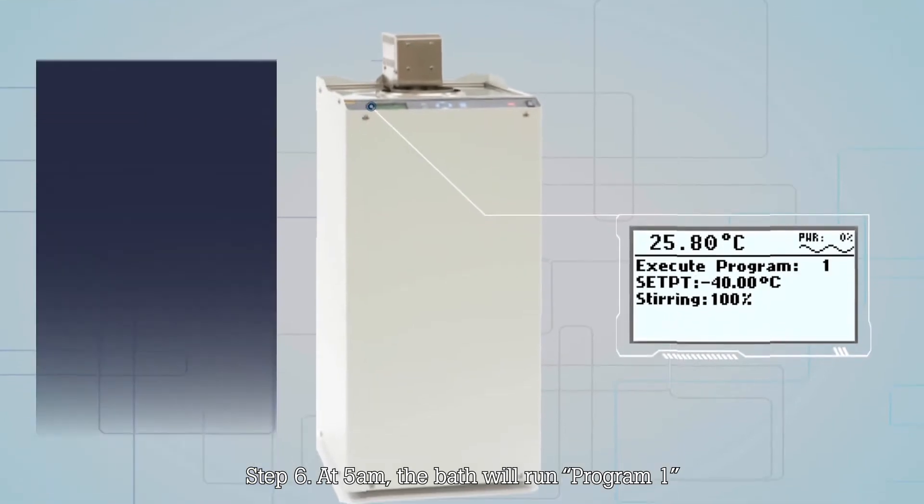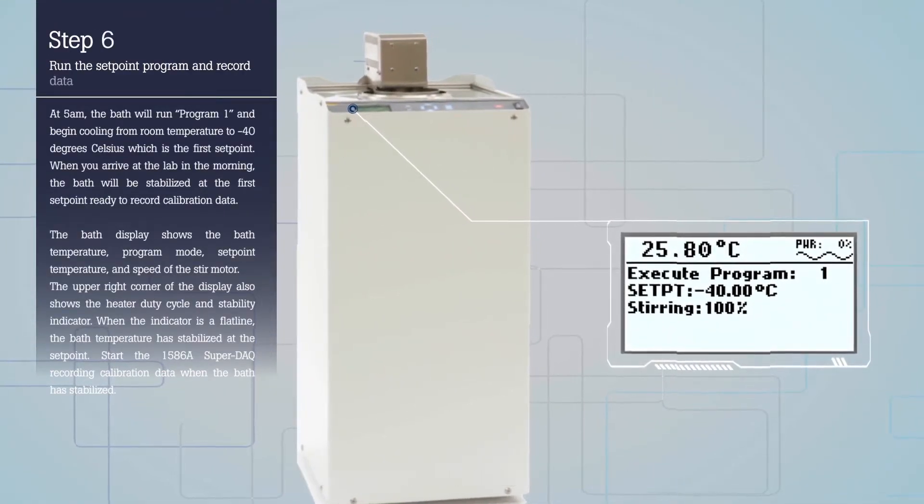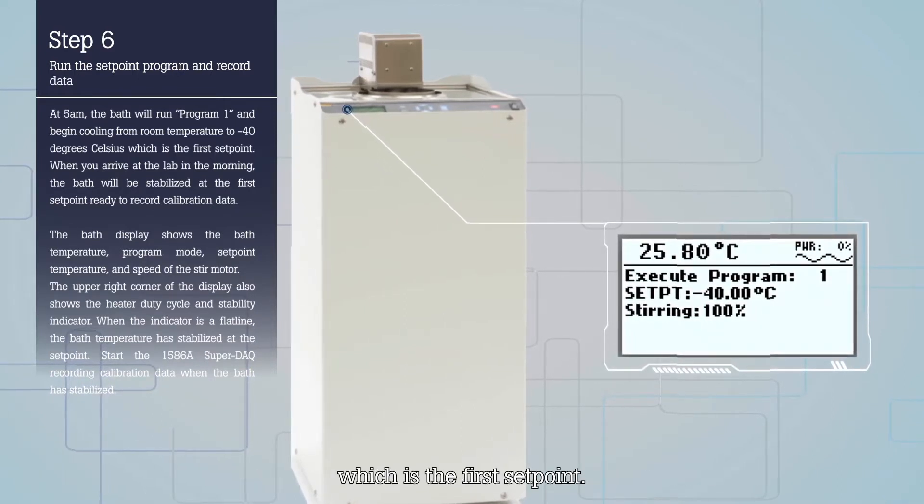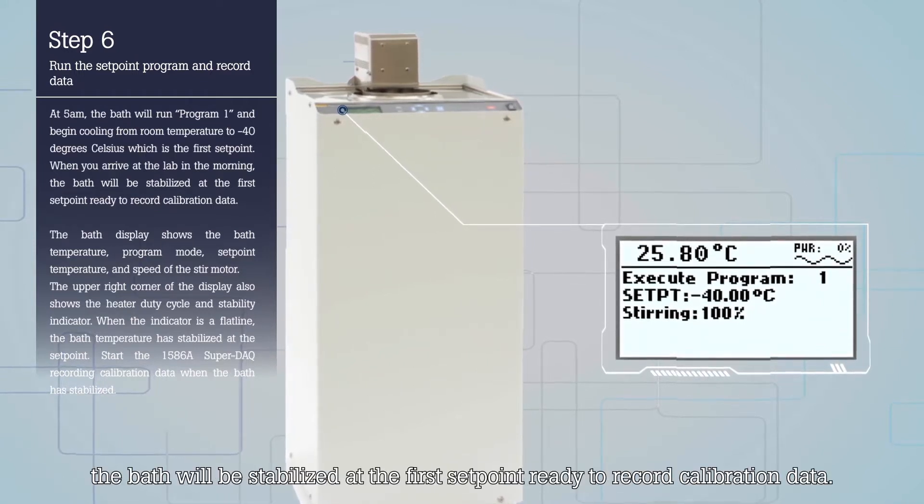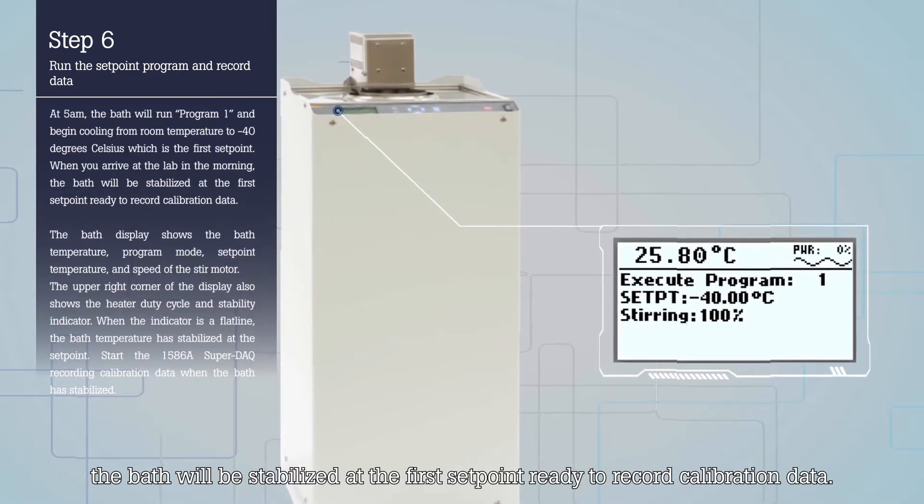Step 6. At 5 a.m. the bath will run Program 1 and begin cooling from room temperature to minus 40 degrees Celsius, which is the first set point. When you arrive at the lab in the morning, the bath will be stabilized at the first set point ready to record calibration data.